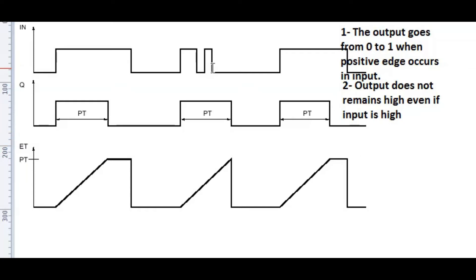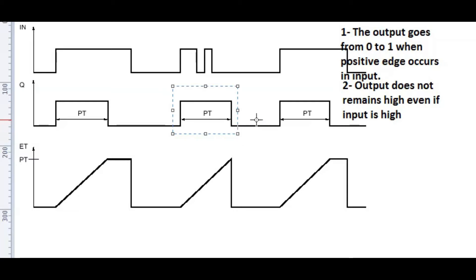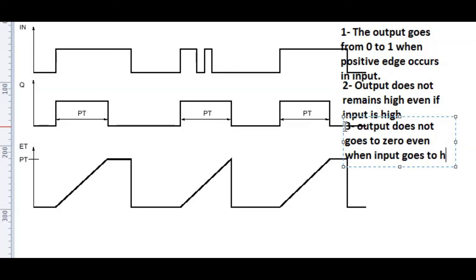Now let's see the third condition. As you can see from the graph, we give a positive edge and the output becomes high. But after some time — let's suppose after 2 seconds — we turn off the input. You can see that the output does not go to 0; it finishes its full timer of 10 seconds and then goes to 0. That means the third working principle of this timer is that the output does not go to 0 even when the input goes to 0.